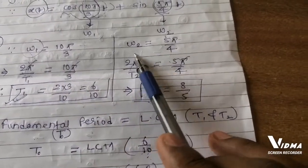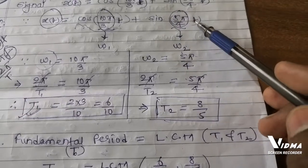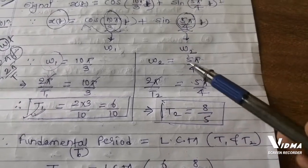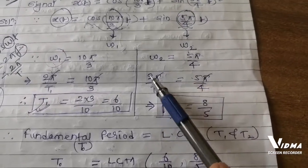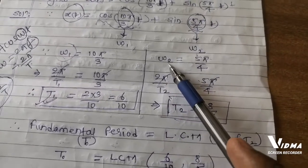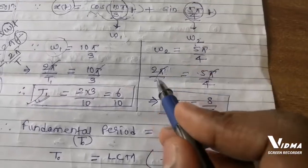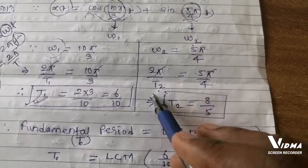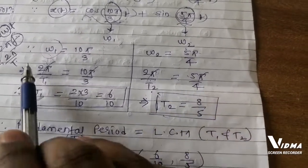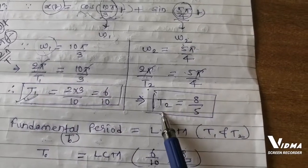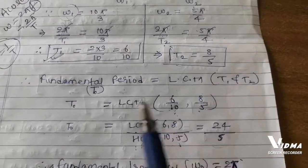Similarly, we calculate omega 2. The coefficient of time is 5π/4, so omega 2 = 5π/4. Using omega = 2π/T₂, we get 2π/T₂ = 5π/4. Simplifying, we obtain T₂ = 8/5.